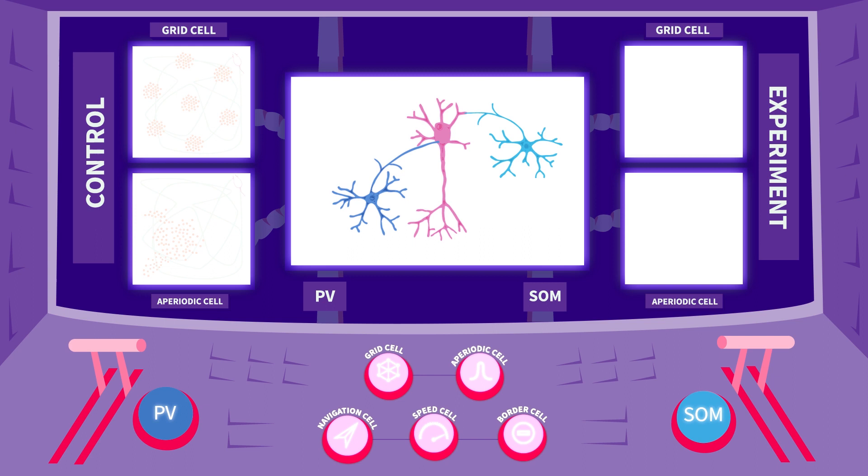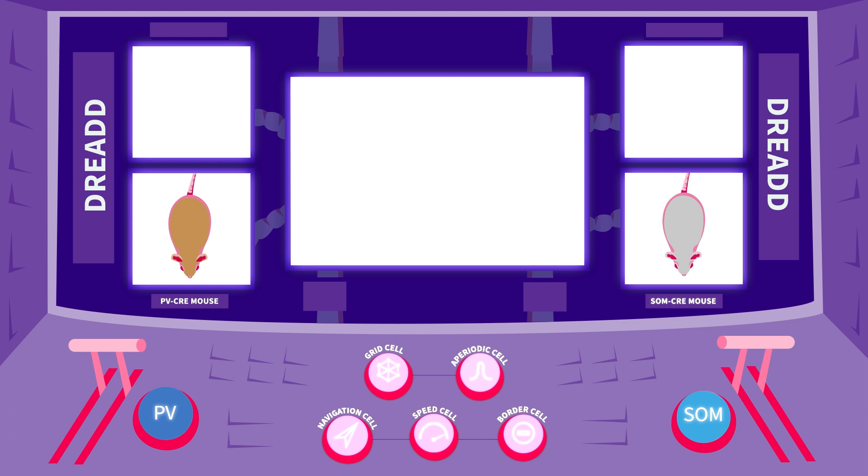We then used a pharmacogenetic tool to selectively silence the activity of either PV or SOM interneurons. To target the two subgroups selectively, we used PV-Cre and SOM-Cre transgenic mice.